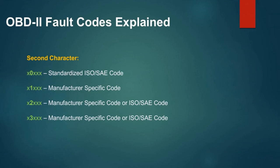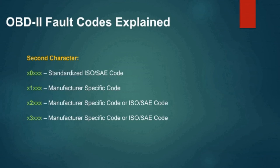The second character further classifies the code. 0 indicates a Standardized ISO/SAE code. 1 indicates a Manufacturer-Specific code. 2 indicates a Manufacturer-Specific code or ISO/SAE code. 3 also indicates a Manufacturer-Specific code or ISO/SAE code.